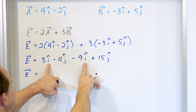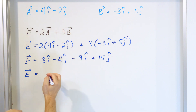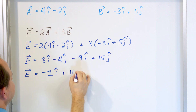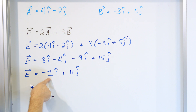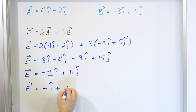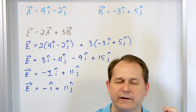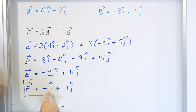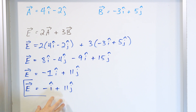Now we combine like terms — the like terms here are the unit vectors. We have 8 minus 9, which means negative 1 in the i direction. And negative 4 plus 15 gives us positive 11 in the j direction. Typically when we have the number 1 as a coefficient, just like in algebra, we don't write it. So more commonly you would write this as negative i plus 11j. This is understood to be negative 1 in the i direction plus 11 in the j direction — that's vector E in component form.